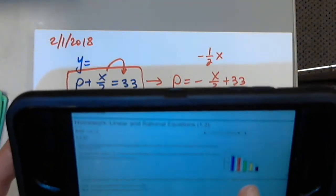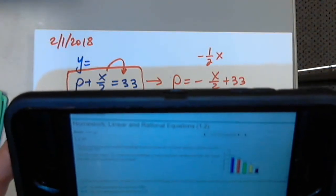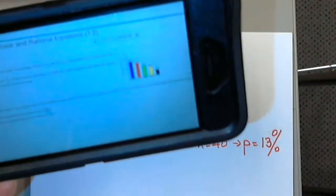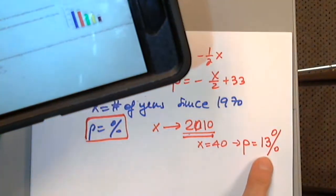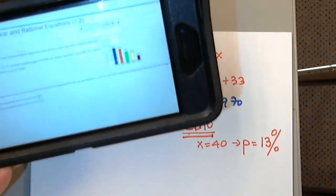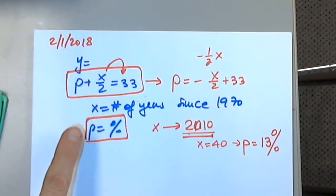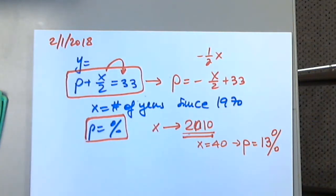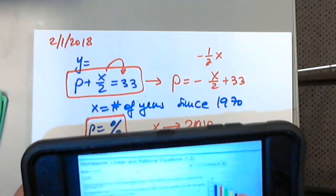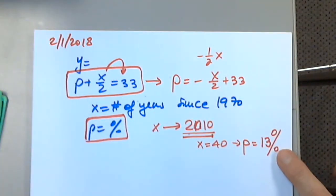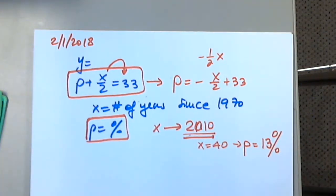We have to locate 2010 on the bar graph. At the top of the bar there is a number, and we have to see whether that number is 13. If it is 15, the equation underestimates. If the chart shows 10 and our answer is 13, the equation is overestimating.